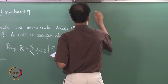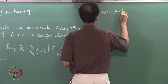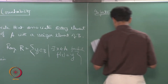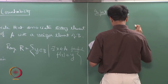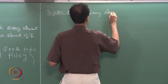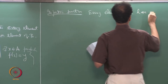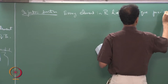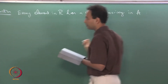An injective function is one where every element in the range R has a unique preimage in A.